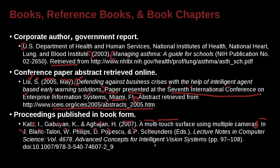The larger book is called 'Advanced Concepts for Intelligent Systems,' Volume 4678. So we have the smaller piece — the paper — and then the larger piece — the book — and then the page number for that. Then we have a DOI.